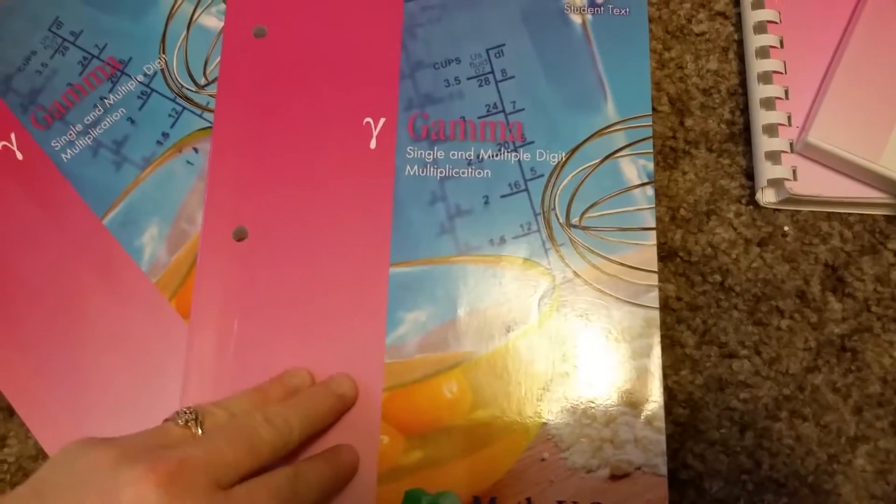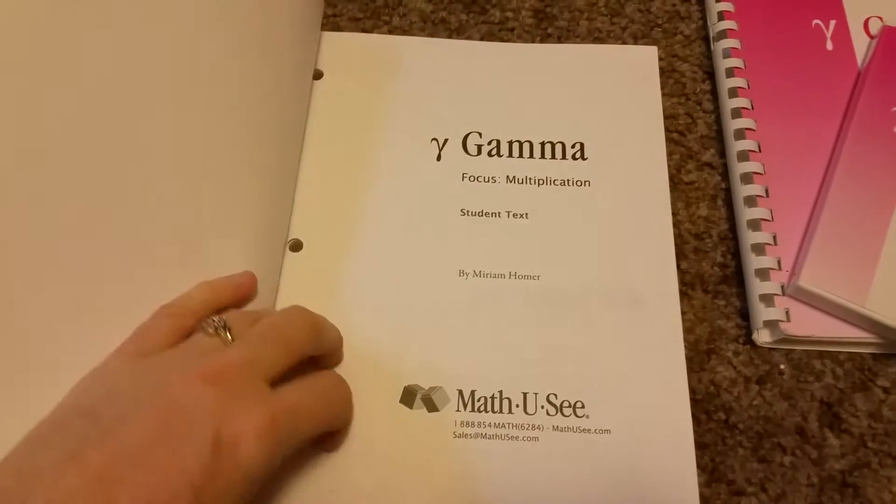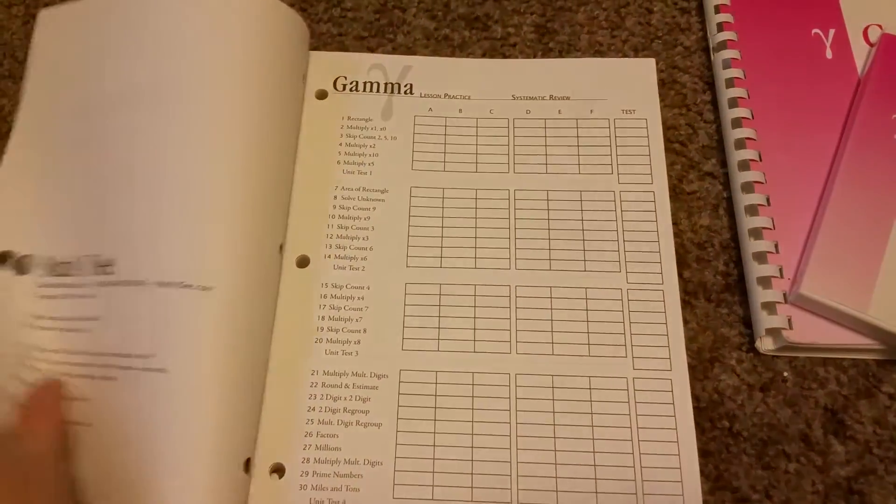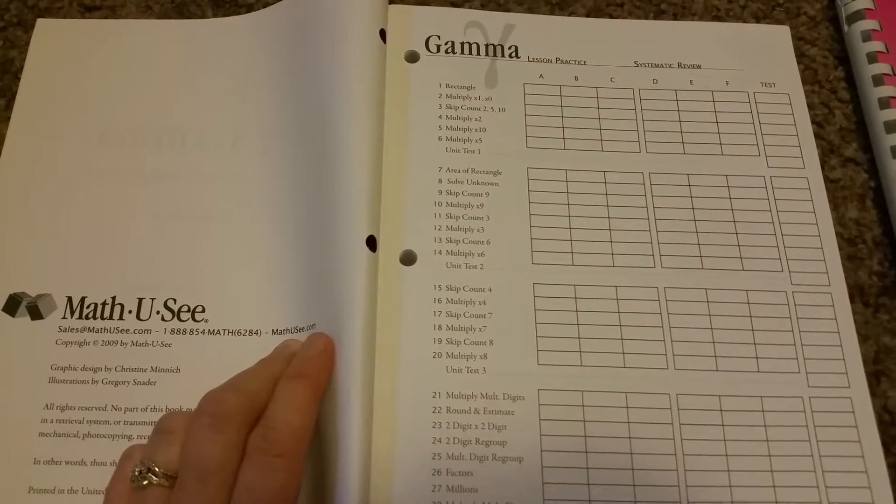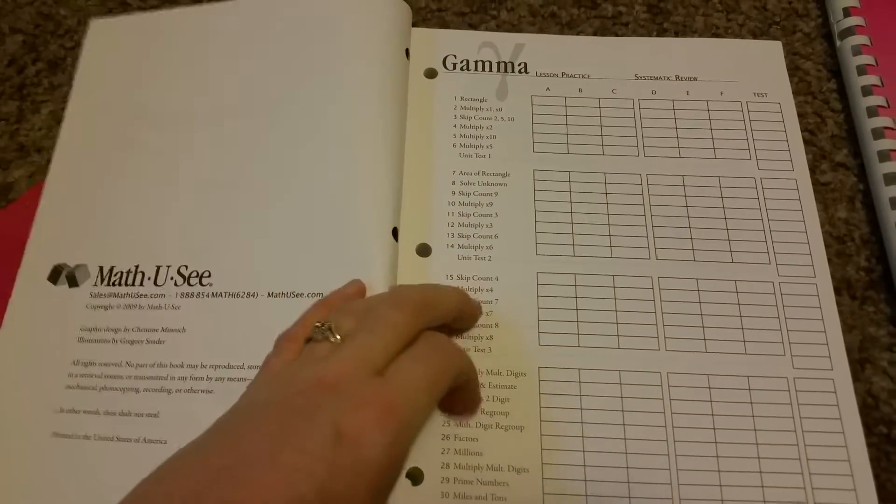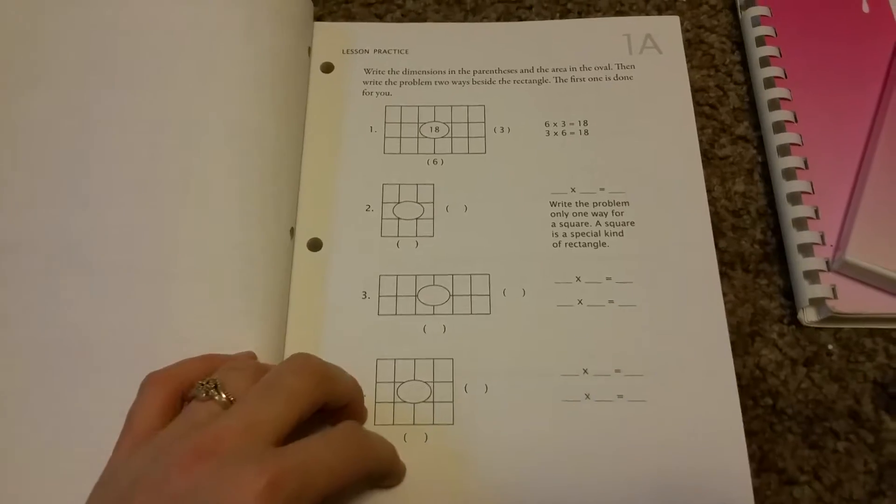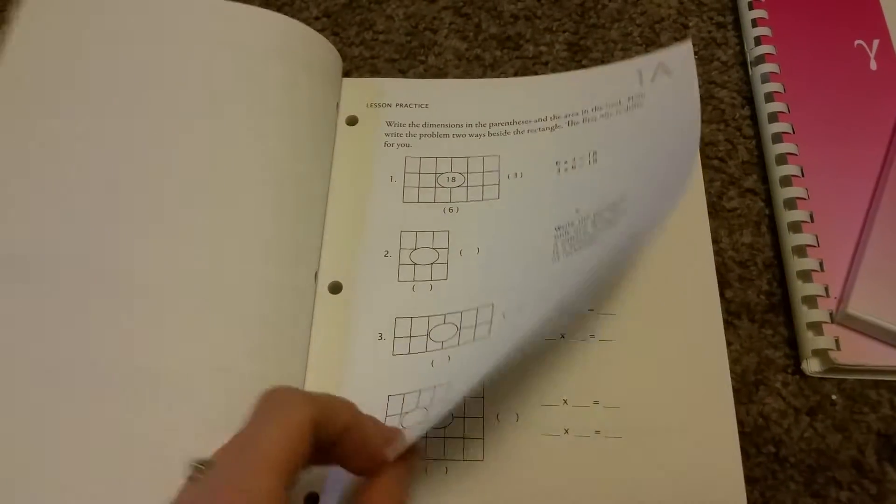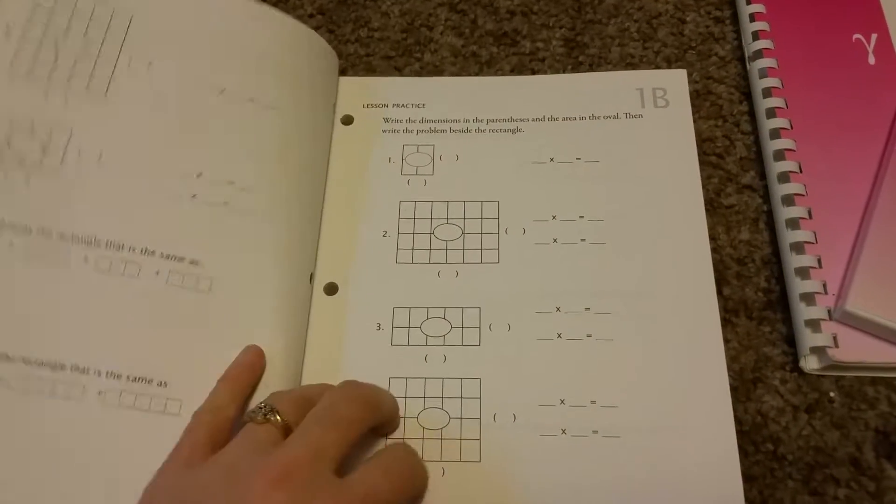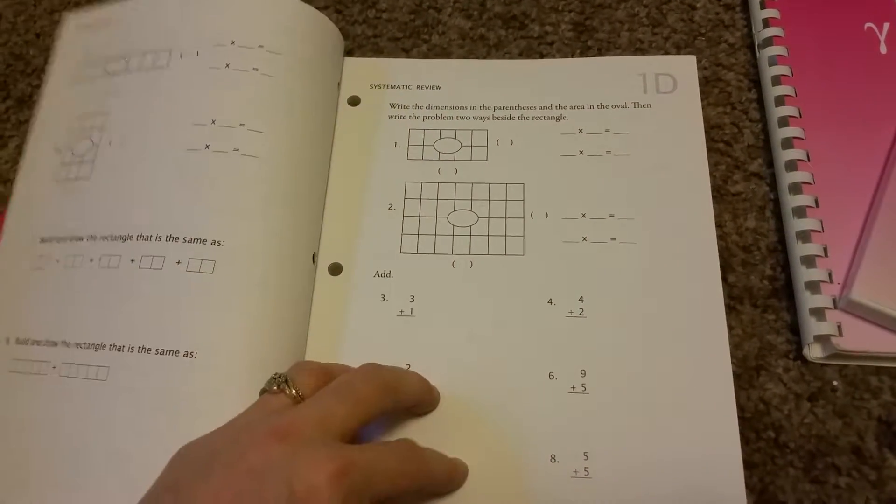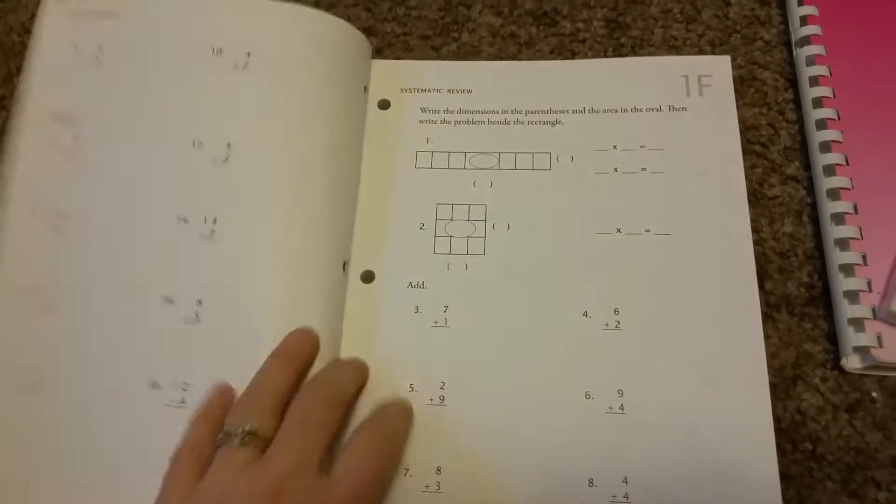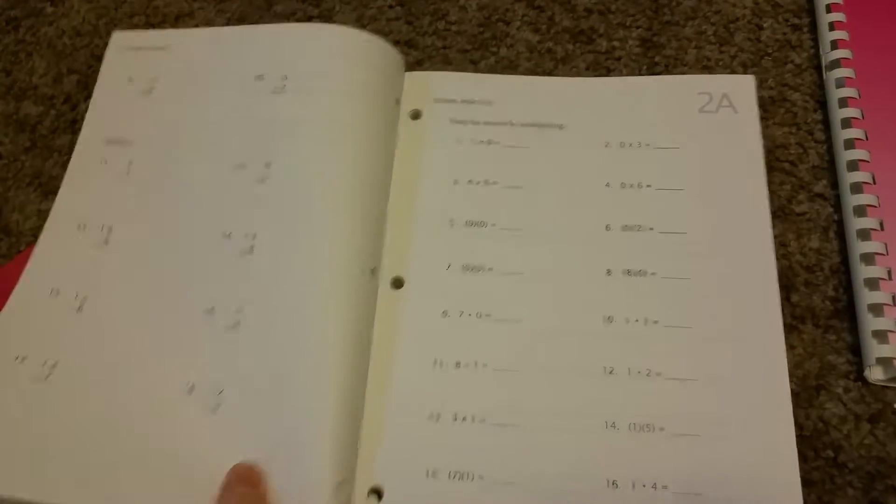The student text, sorry for the glare. So third grade here, they're doing single and multiple digit multiplication. It shows you skip counting. This is lesson one. You do your new concept, your new lesson. You have A, B, and C for your worksheets for your new lesson, and then you have D, E, and F for your review. Then after that it goes to the second lesson.